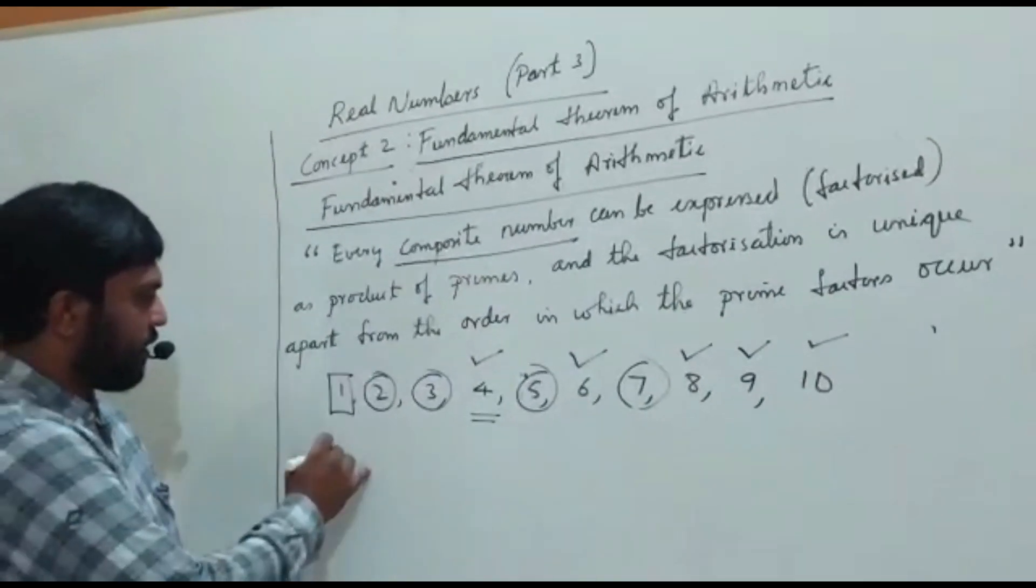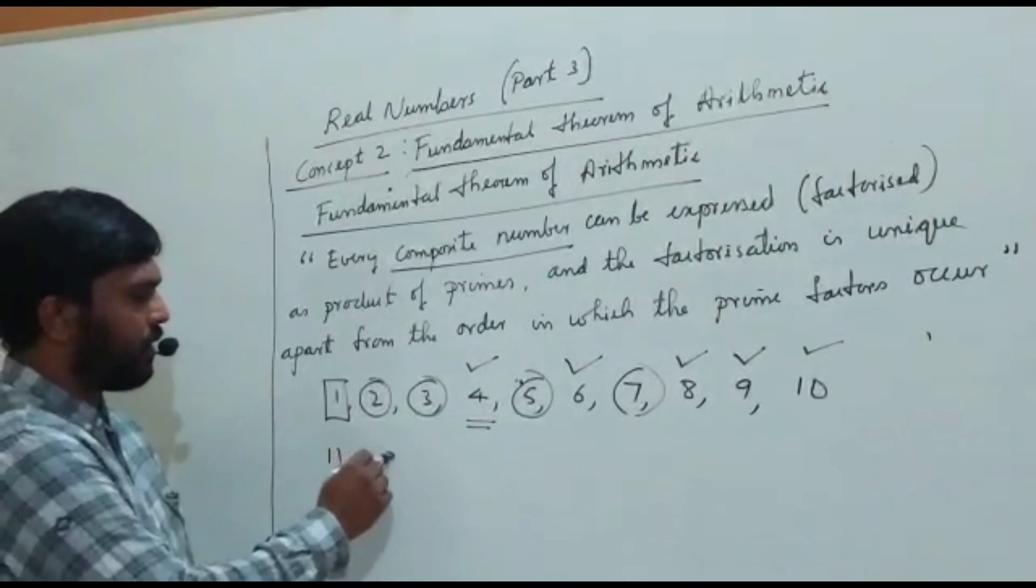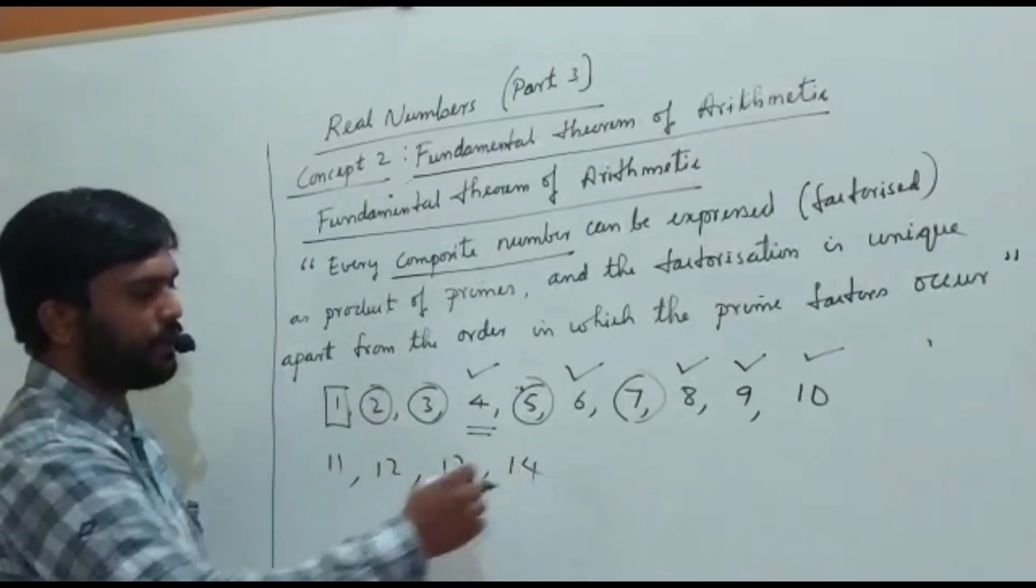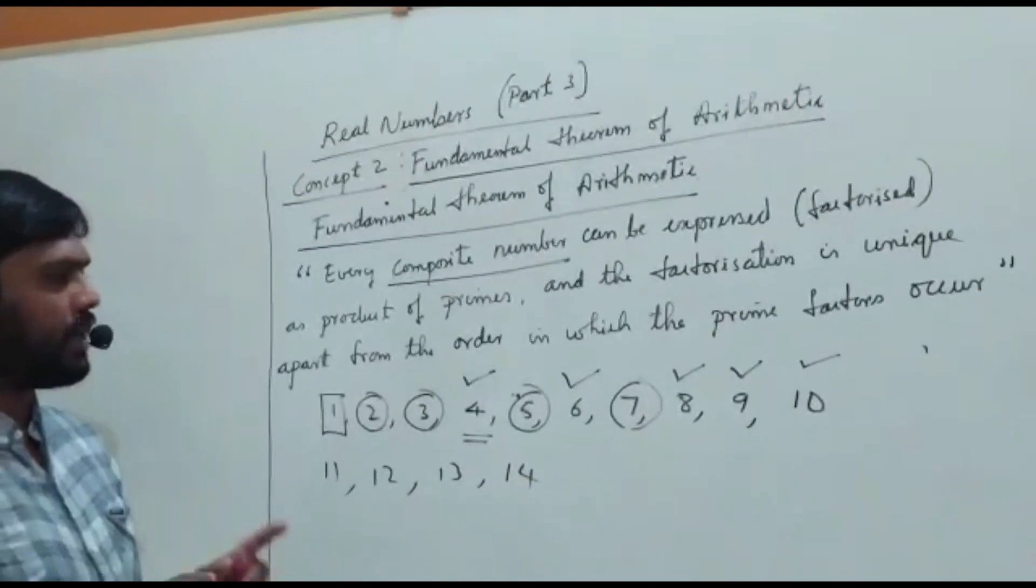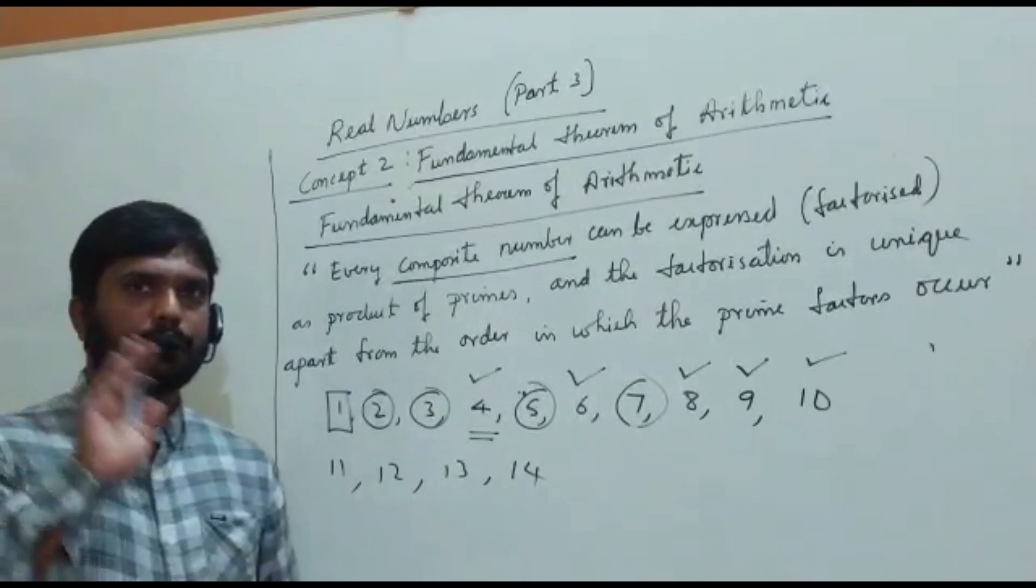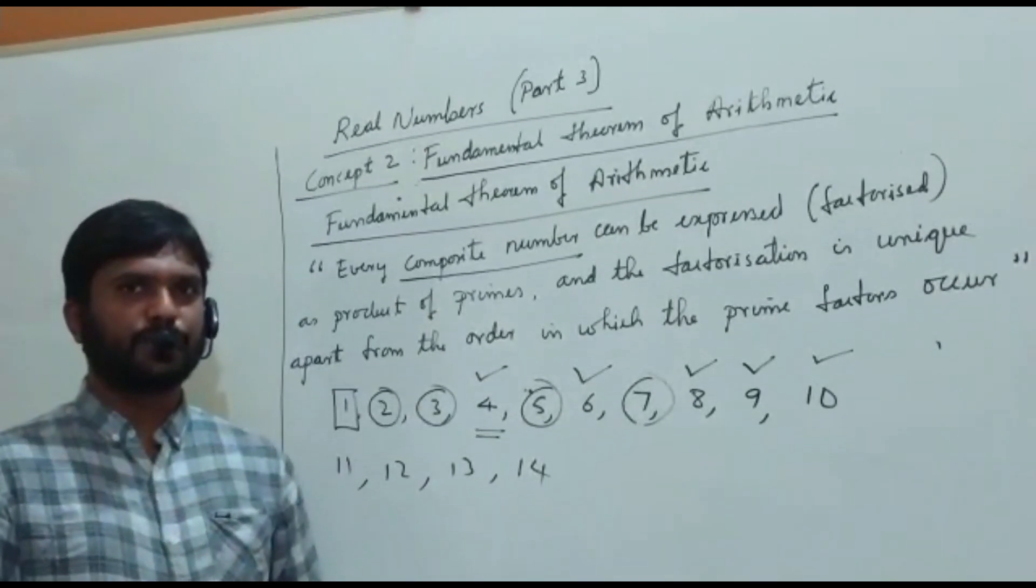In the same way, 11 is a prime number, 12 is a composite number, 13 is a prime number, 14 is a composite number. So understand what is composite number. The number which is not prime is called a composite number.